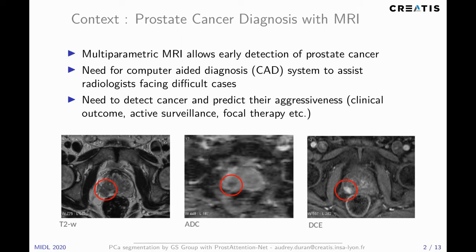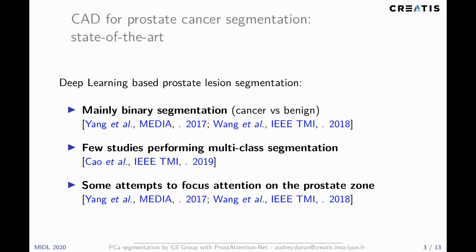There is a need to detect cancer and predict their aggressiveness for the clinical outcome, active surveillance, or focal therapy. The vast majority of developed CAD models focus on the detection and segmentation of clinically significant cancers. There is a need to go one step further by also predicting the degree of prostate cancer aggressiveness, referred to as Gleason score.